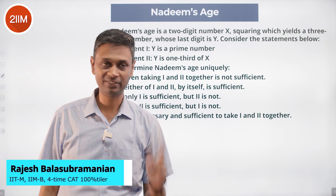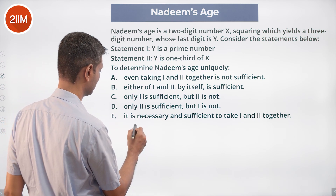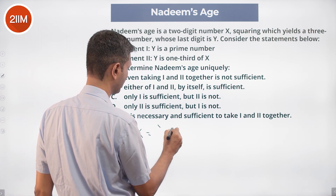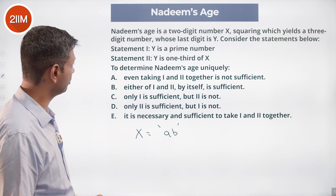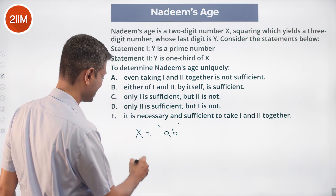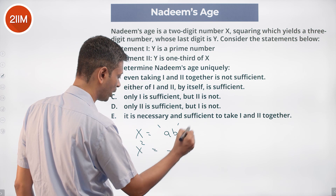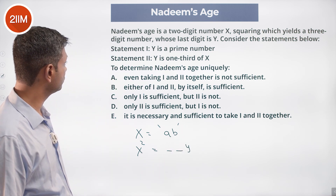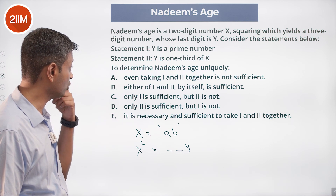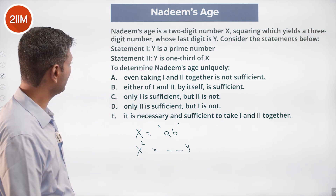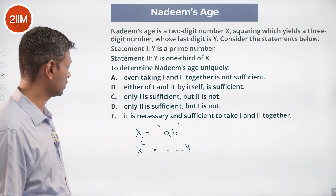What a beautiful question! Nadeem's age is a two-digit number X. X is a two-digit number A-B, squaring which yields a three-digit number whose last digit is Y — so X squared equals dash-dash-Y. Consider the statements below: Statement 1: Y is a prime number. Statement 2: Y is one-third of X. To determine Nadeem's age uniquely.